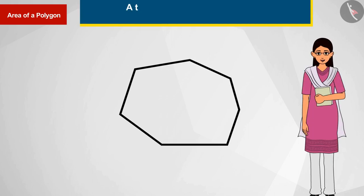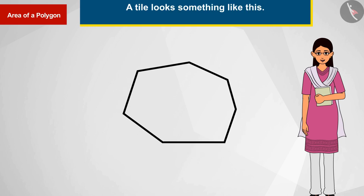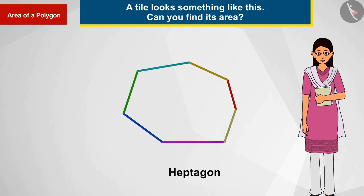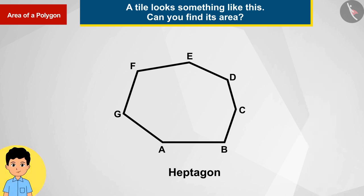A tile looks something like this. Can you find its area? The visible figure is a heptagon because the figure has seven sides. Let's first name the tiles as A, B, C, D, E, F, and G.